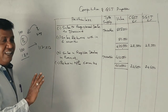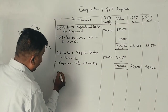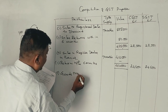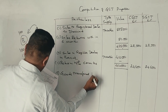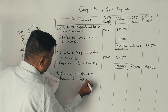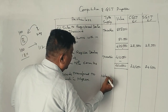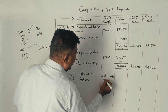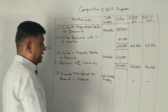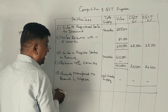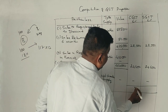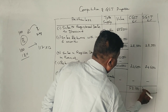Goods transferred to branch in Mysore — not a taxable supply. The GST payment is $53,100.